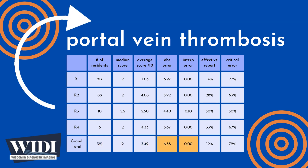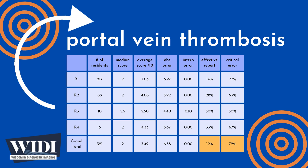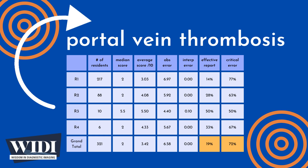On average, 6.58 points out of 10 were lost due to missed observations. No points were lost due to interpretive errors. We define an effective report to be one which achieves scores between 7 and 10 — in terms of letter grades, this would be A and B. In this most missed case, 19% of residents produced effective reports.